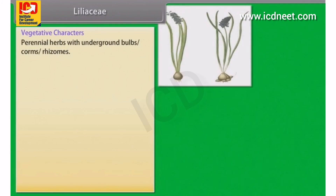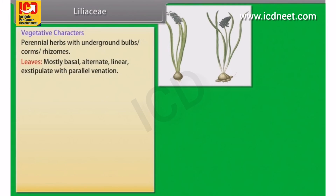Vegetative characters of Liliaceae: Perennial herbs with underground bulbs, corms or rhizomes. Leaves are mostly basal, alternate, linear, exstipulate, with parallel venation.